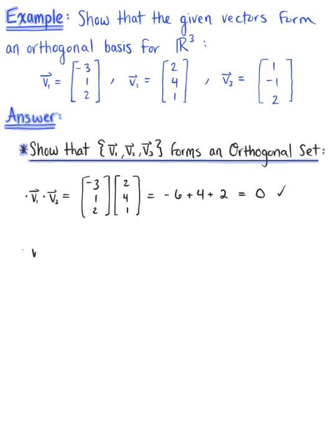Our second case: we have vector V₁ dotted with vector V₃. Vector V₁ has the components [-3, 1, 2], and we are dotting this with the vector with components [1, -1, 2]. Computing this dot product, we have -3 - 1 + 4, which again gives us 0.